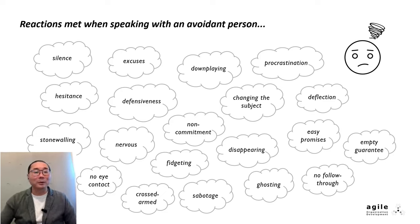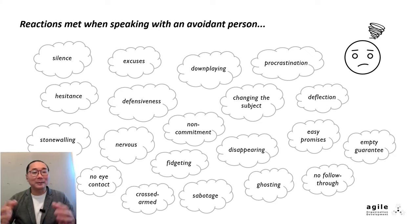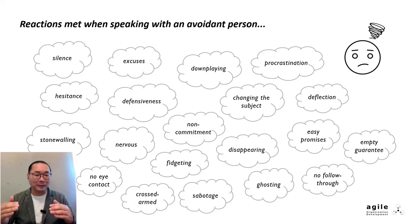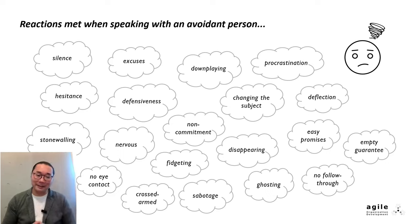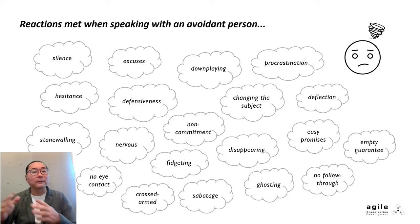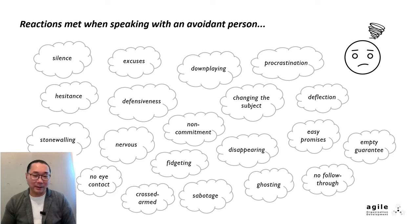We're met with verbal deflection — excuses, downplaying the issue, and attempts to change the subject. We get noncommittal responses, superficial agreements like "yeah, yeah, okay" with no intention to follow through. Easy promises, empty guarantees. And then there's withdrawal — attempts to fade away, disappear, or ghost the conversation entirely.